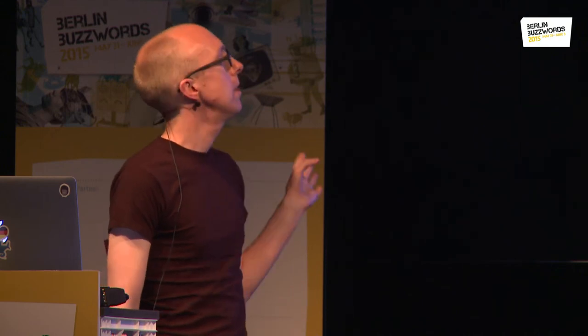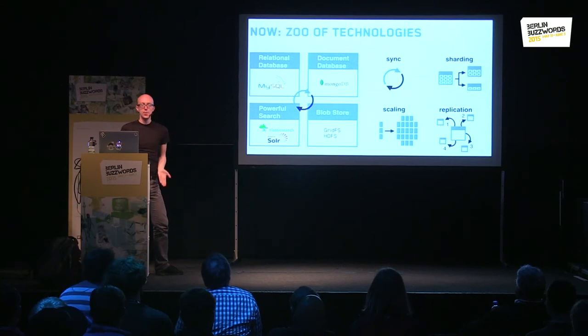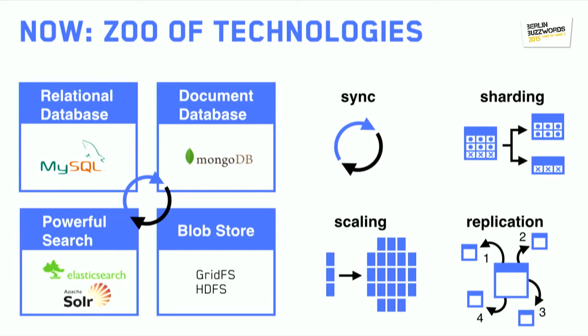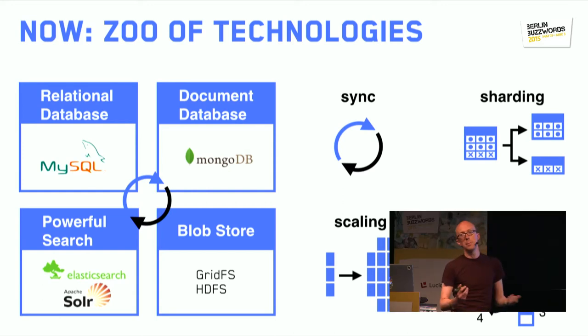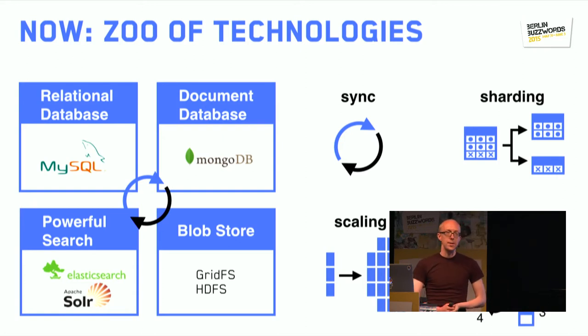Traditionally, when we've needed to change our requirements or increase an application in size, many developers have followed this path. We start with something traditional — a relational database like MySQL. We need more capacity, so we add more instances, but then we have to worry about master and node setups, sharding, and keeping the information in synchronization.